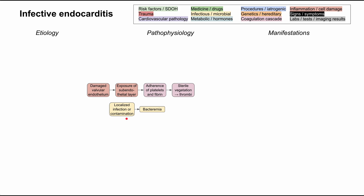On the bacteria end, if you have a localized infection — like on your skin, maybe a pneumonia, maybe a UTI — that can lead to a bacteremia, or bacteria in the blood. Bacteria in the blood can then colonize the vegetation, so it's no longer sterile; it now becomes an infected vegetation. The same thing can happen: it can still break off and cause thrombi. Those thromboemboli are sometimes septic if they have a bacterial infection, and they can be thrown off into the bloodstream and cause all kinds of problems.